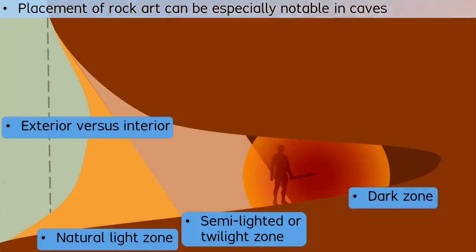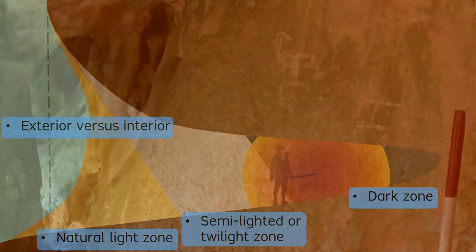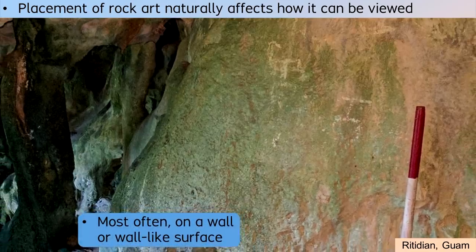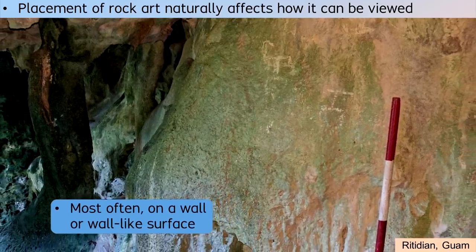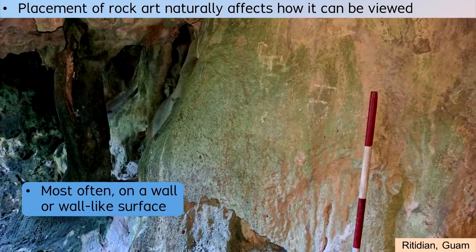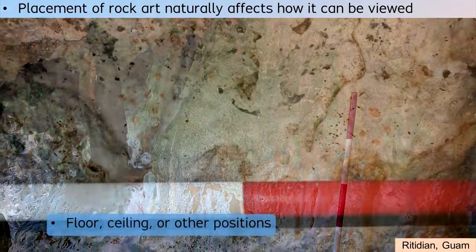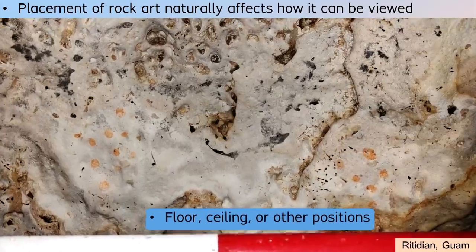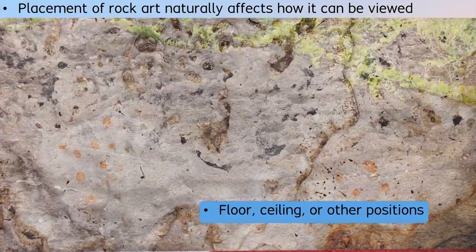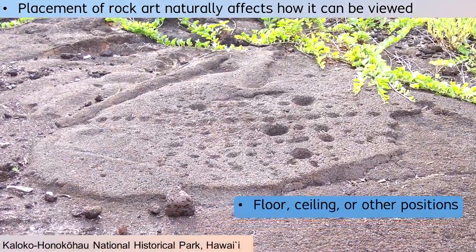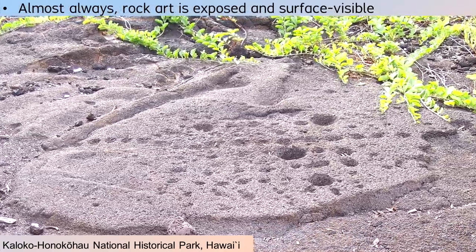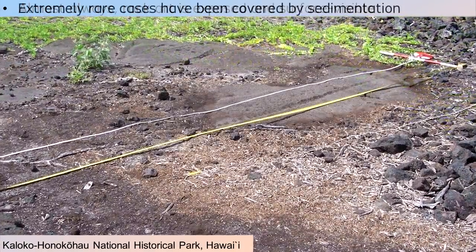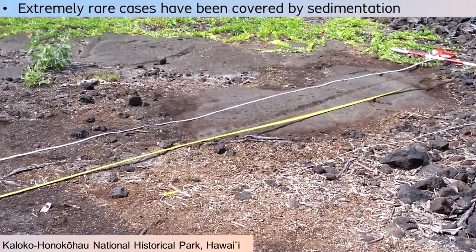Whether in a cave or in an outdoor setting, rock art most often is applied on a wall or a wall-like surface that is most easily visible in an ordinary viewing stance. Other instances are in difficult or unexpected positions, sometimes on a ceiling or on a floor. Most instances of rock art are surface visible. In extremely rare cases, rock art has been covered by sedimentary layers.